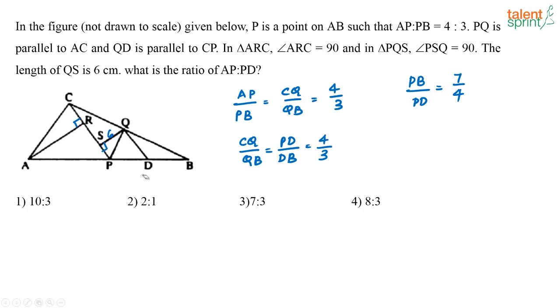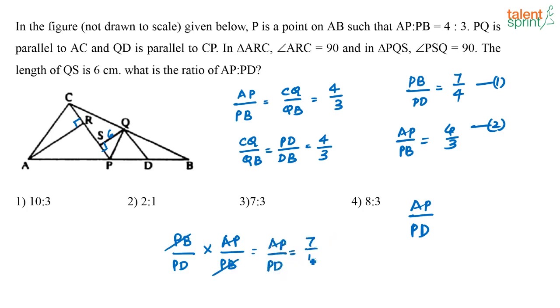Now, I know PB by PD is 7 by 4. I also know AP by PB is equal to 4 by 3. What am I supposed to find out? I have to find out what is AP by PD. So I have two equations here. What will happen if I multiply these two equations? It is nothing but PB by PD into AP by PB. So these two will get cancelled and I will have AP by PD, which is what I want, which is nothing but 7 by 4 into 4 by 3, which is equal to 7 by 3.